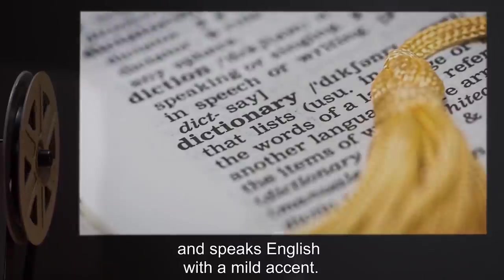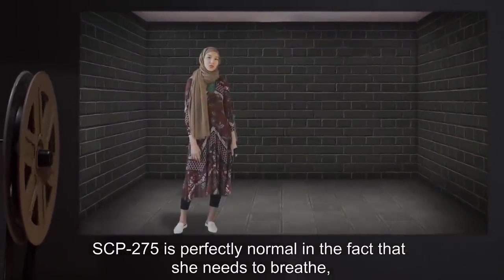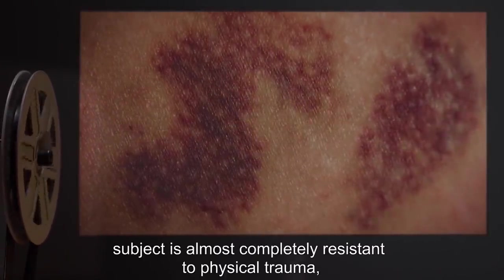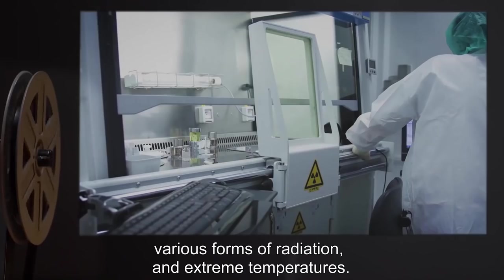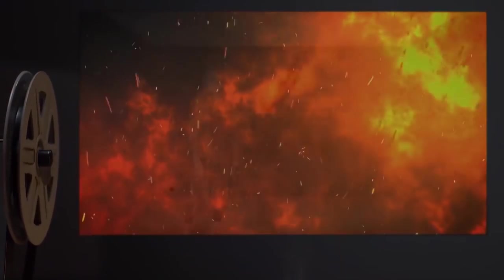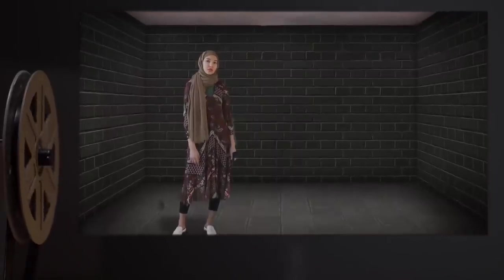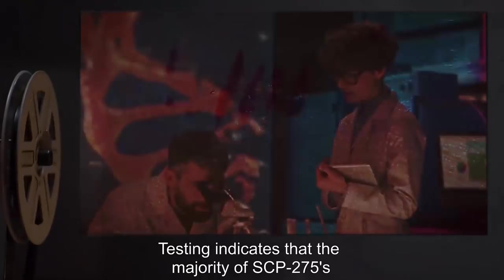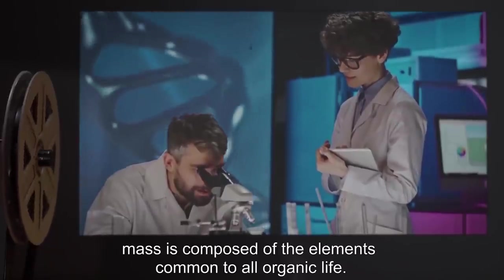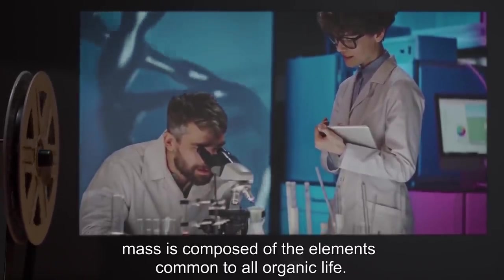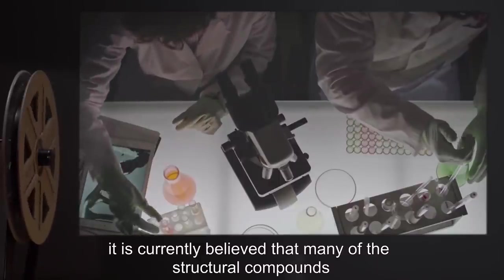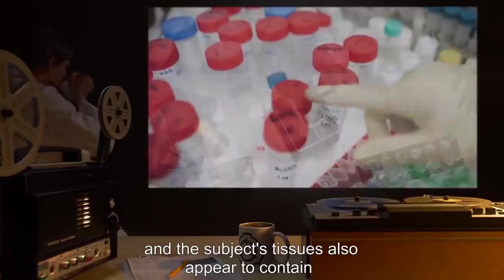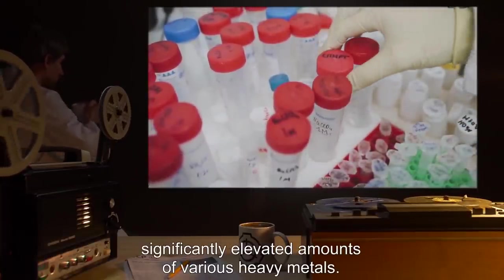SCP-275 is perfectly normal in the fact that she needs to breathe, eat, and sleep. However, subject is almost completely resistant to physical trauma, various forms of radiation, and extreme temperatures. By SCP-275's own recollection, her flesh has never experienced any damage and her skin has never been pierced or scratched. Testing indicates that the majority of SCP-275's mass is composed of the elements common to all organic life; however, it is currently believed that many of the structural compounds have been replaced with significantly more durable substitutes, and the subject's tissues also appear to contain significantly elevated amounts of various heavy metals.